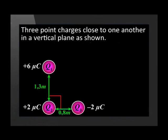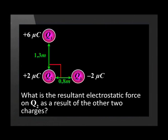There are quite a lot of calculations involved in a question of this nature. Try this one on your own. Three point charges are placed in close proximity to one another in a vertical plane. The charges and distances between them are shown here. What is the resultant electrostatic force on Q2 as a result of the other two charges?